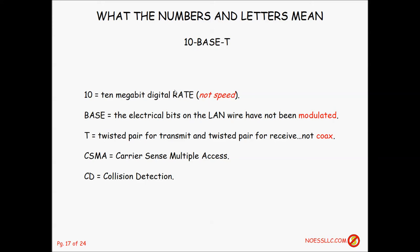So what do the numbers and letters in '10BaseT' mean? '10' is the 10-megabit digital rate — not speed, rate. 'Base' means the electrical bits on the LAN are not modulated — the bits come straight out of the NIC and onto the wire without any conversion process; this is called baseband. 'T' is twisted pair, not coax. The original Ethernet with a capital E was on coax. Twisted pair uses separate transmit and receive paths.